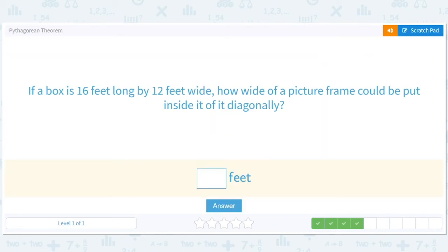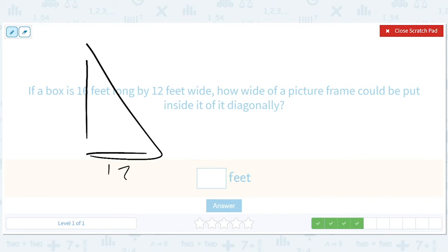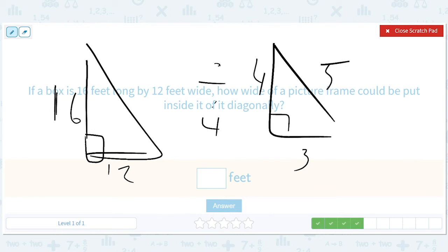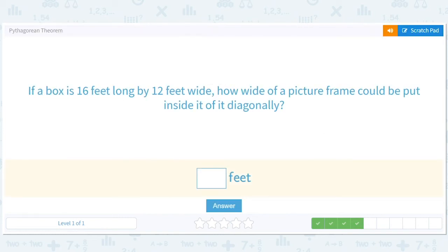If a box is 16 feet long by 12 feet wide, how wide of a picture frame could be put inside it diagonally? Let's try to use a special triangle here. We've got 12, 16. It doesn't look special, but what if we use proportions? What if we divide everything by 4? This would be 3. 12 divided by 4 is 3, 16 divided by 4 is 4, and then we know we get 5. So we can multiply this by 4 to get 20.